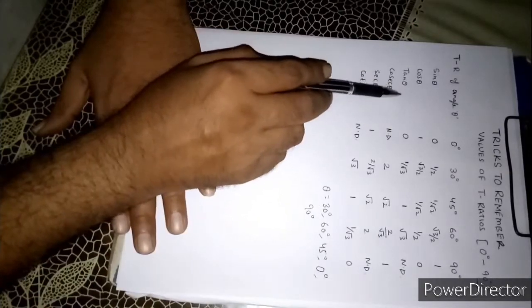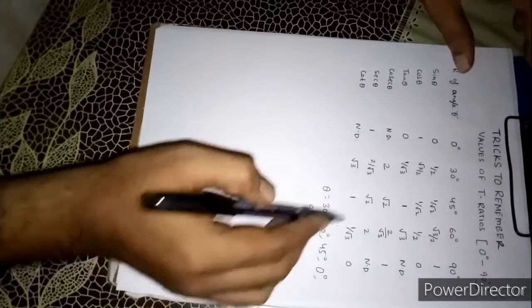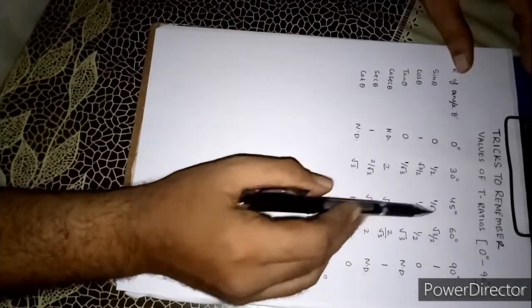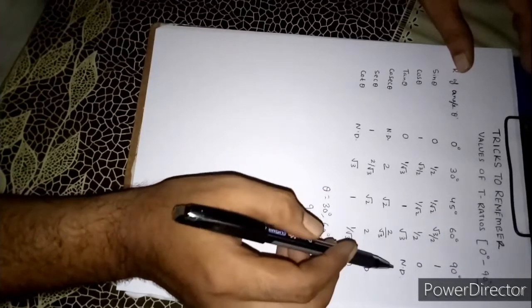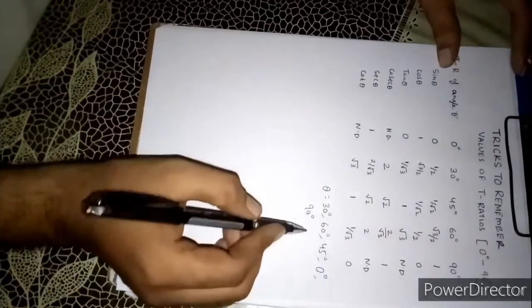Just you remember the value of tan. If you can remember that tan 30 degree is 1 by root 3, tan 45 is 1 and tan 60 is root 3, you can find the value of other trigonometric ratios.